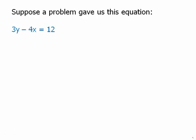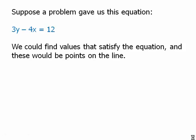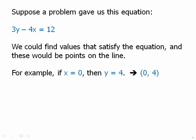So let's look at this particular equation. Suppose the problem gave us that equation. We could find values that satisfy that equation, and these would be points on the line. For example, we could just plug in, if we plug in X equals zero, then we'd see that we'd get 3Y equals 12, so Y would equal 4. So that means that (0, 4) has to be one point on the plane.